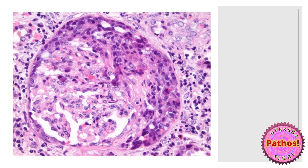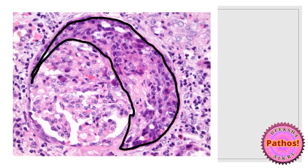Normal then abnormal — now this is very interesting. If you notice carefully, something seems to have come between the Bowman's capsule and the capillaries of the glomerulus. The structure I've highlighted has a roughly crescent shape — I'll show it to you again. You can make out a crescent-shaped structure on light microscopy.